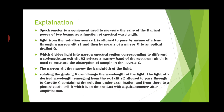A spectrophotometer is equipment used to measure the ratio of the radiant power of two beams as a function of spectral wavelength. Light from the radiation source L passes by means of a lens through a narrow slit S1, then by means of a mirror M to an optical grating G, which divides light into narrow spectral regions corresponding to different wavelengths. Exit slit S2 selects a narrow band of the spectrum used to measure the absorption of a sample in the cuvette C.